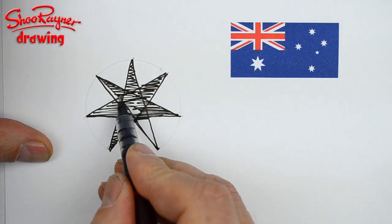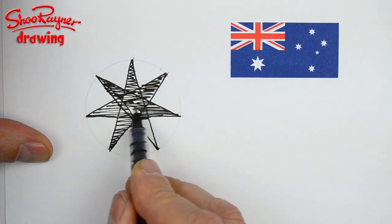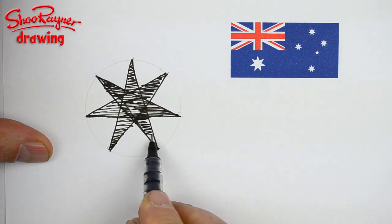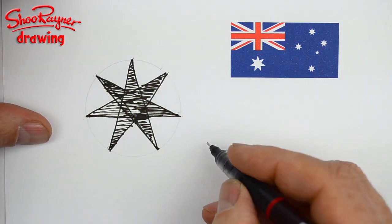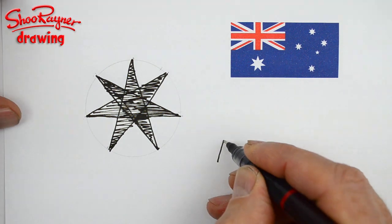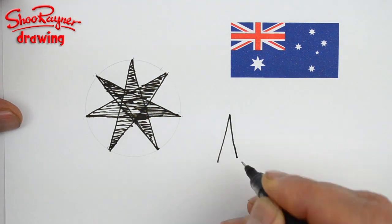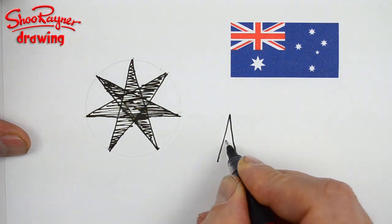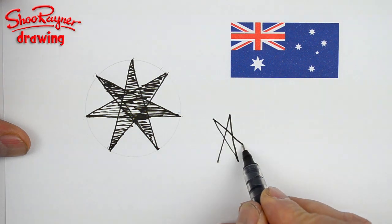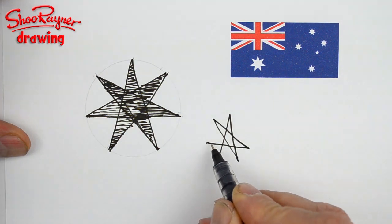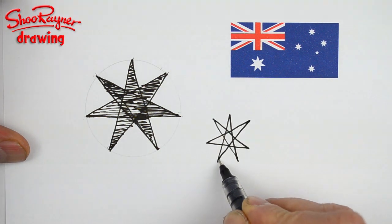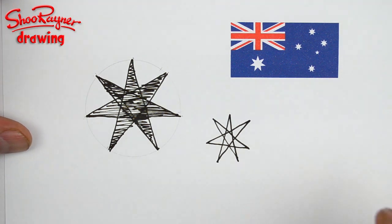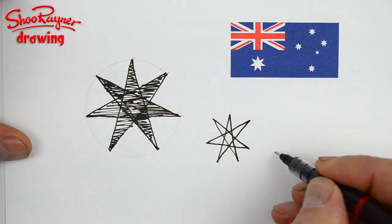So if you want to practice, it's up and down and across to there, and then across to there, and then across to there, across to there, and back again. If you keep practicing, you'll get better.